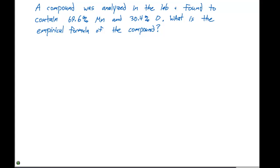The example problem we're going to perform based on empirical formulas is the following. A compound was analyzed in the lab and found to contain 69.6% manganese and 30.4% oxygen. What is the empirical formula of the compound?